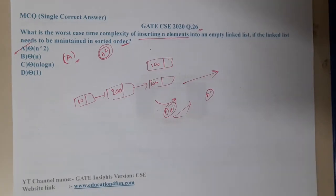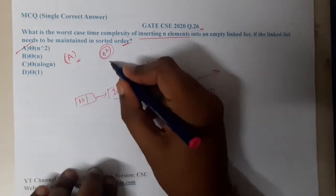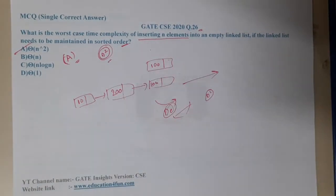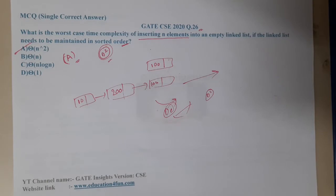I want to give you a small trick also. Few of you might be saying, how can you directly say that it will take n square number of times?